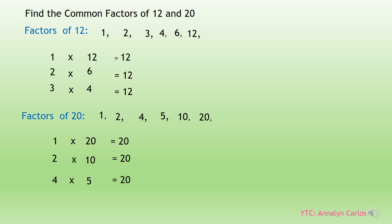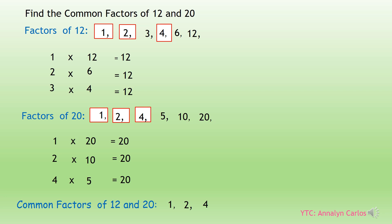Since we have the factors of 12 and the factors of 20, let us now identify the common factors of 12 and 20. Looking at both lists, the numbers they have in common are 1, 2, and 4. So the common factors of 12 and 20 are 1, 2, and 4.